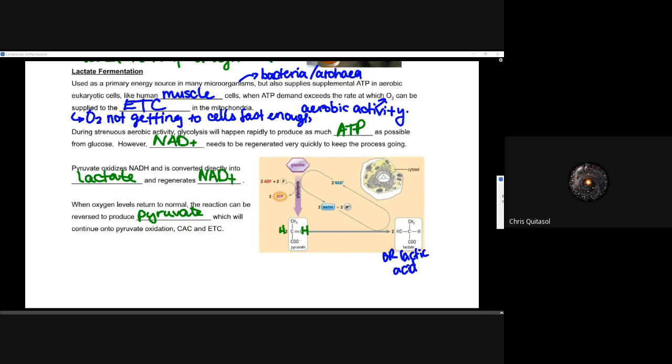When oxygen levels return to normal, that reaction can be reversed to produce pyruvate, which will continue on to the pyruvate oxidation, CAC, and electron transport chain. We're not really going to look in detail with that process of lactate fermentation because you won't be responsible for understanding that specific pathway in that much detail. The reality is you already have enough pathways on your mind. So don't really worry too much about the specifics of lactate fermentation right now, because I'm just covering it as a means to understand that it's an alternative when oxygen and NAD plus are not in high abundance.